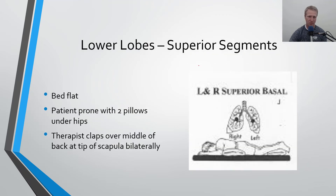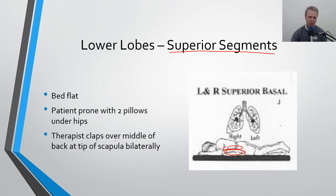Finally, for the lower lobes superior segments, the bed is flat with the patient prone and two pillows underneath their hips, raising up the hip area just a little bit. The therapist claps over the middle of the back at the tip of the scapula bilaterally. Since it's bilateral, this helps you treat both sides of the lungs at the same time.